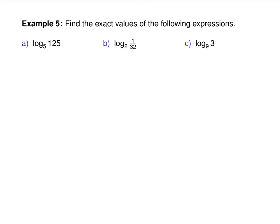Find the exact value of these logs. Revert to the cube root analogy: to evaluate cube root of 1000, you ask what to the 3rd equals 1000. For logs, you're looking for the exponent. Log base 5 of 125: you're asking 5 to what power gives me 125? That's 3. And log base 2 of 1/32: think what power makes 32 — that's 5, but it'll be negative 5 because you've got a fraction.